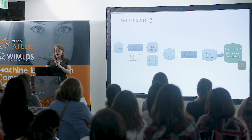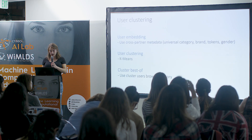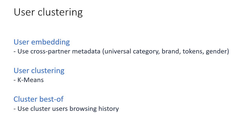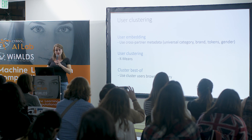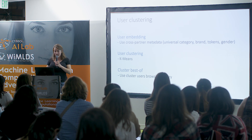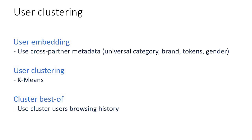Another ongoing project is user clustering. Building on the best-of graph, we add an extra step: from the enriched user browsing data, we compute user clusters and then compute a best-of per cluster. Users are embedded using cross-partner metadata — universal category, brand, token, gender, etc. — and clustered using k-means. There are ongoing experiments on the best way to do this k-means and which metrics to use; standard TF-IDF was not really working. From each cluster, we take the best products from users' browsing history.